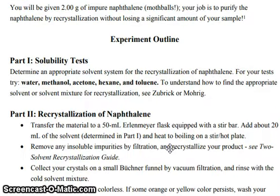What is the experimental outline? The first part, you have to perform a solubility test. Determine an appropriate solvent system for the recrystallization of naphthalene. For your test, try water, methanol, acetone, hexane, and toluene to understand how to find the appropriate solvent or solvent mixture for recrystallization.